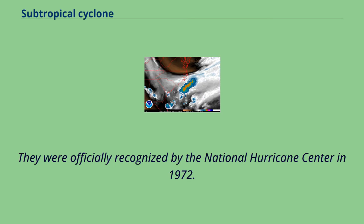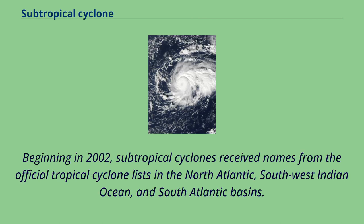Subtropical cyclones were officially recognized by the National Hurricane Center in 1972. Beginning in 2002, subtropical cyclones received names from the official tropical cyclone lists in the North Atlantic, Southwest Indian Ocean, and South Atlantic basins.